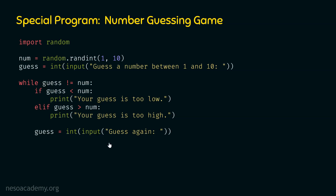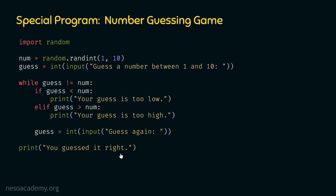We print whether the guess is too low or too high so the user can guess a number closer to the randomly generated one. If the while loop terminates normally, we know that guess equals num, so after the loop we print 'You guessed it right.' This is the complete program for the number guessing game, and now we are ready to execute it line by line.